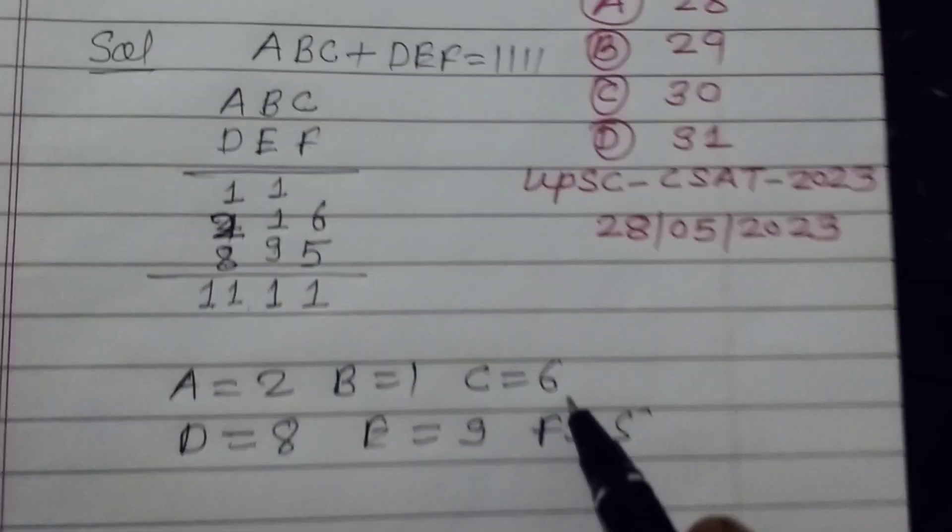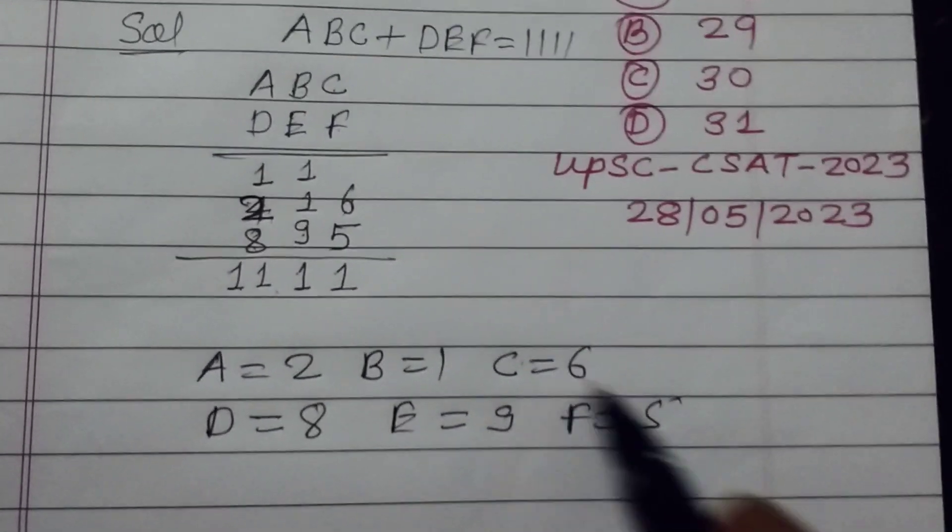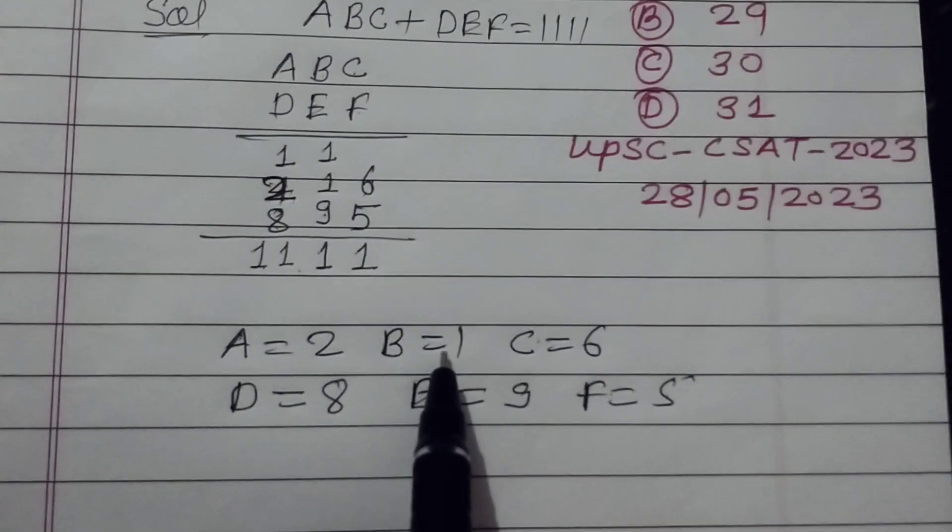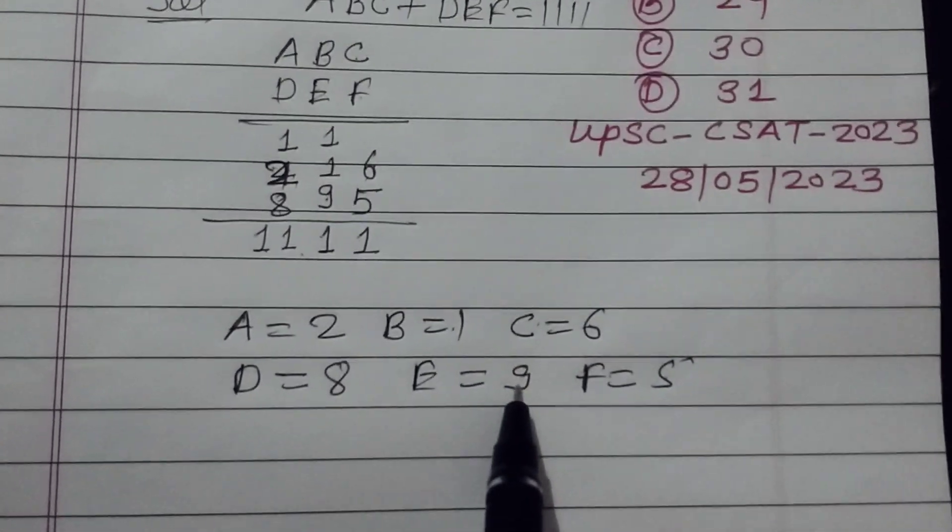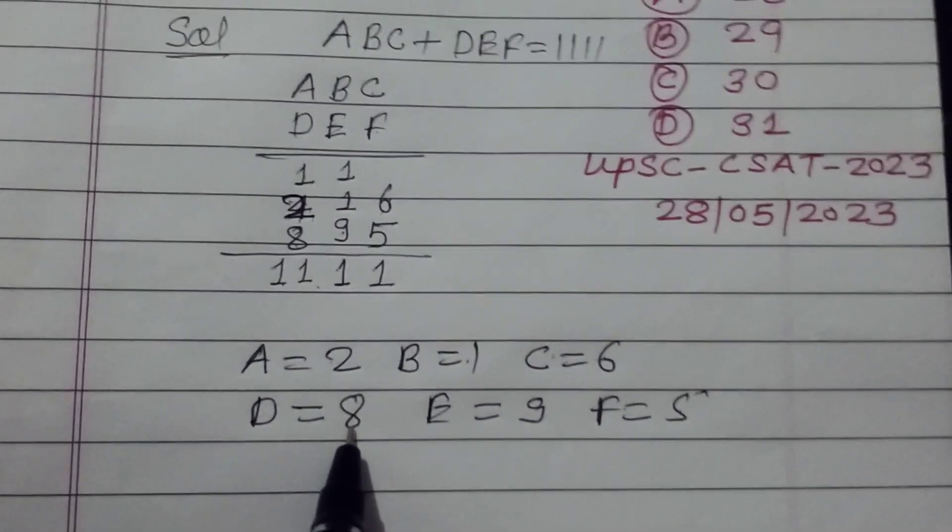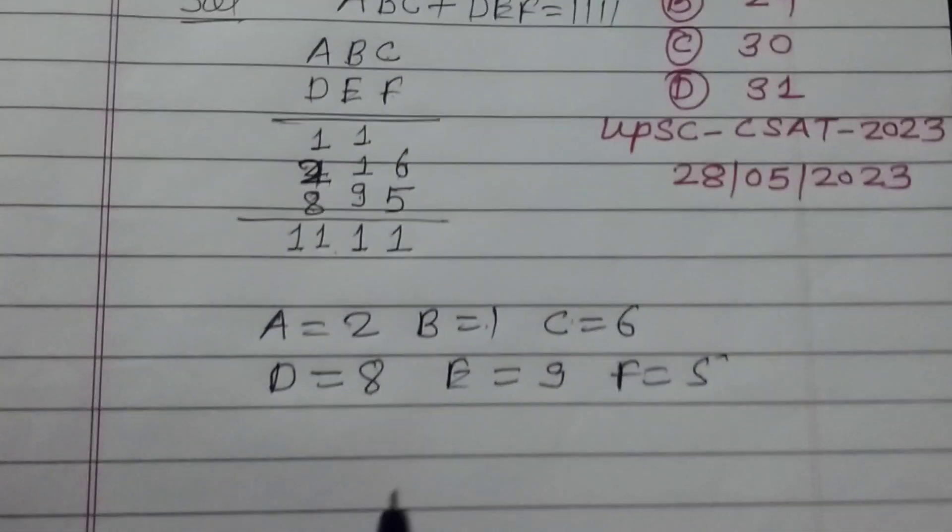We can interchange since C and F. This will be 5, this will be 6. And this will be 9, this will be 1, and this will be 8 and this will be 2. You can interchange it.